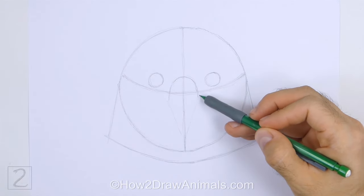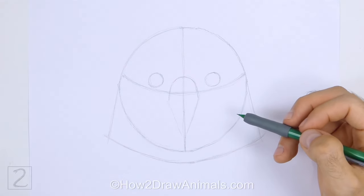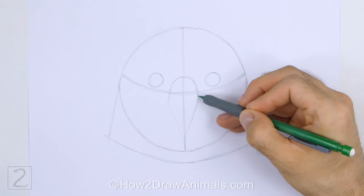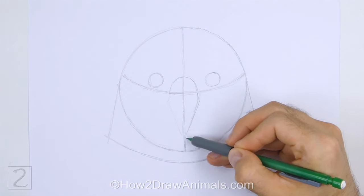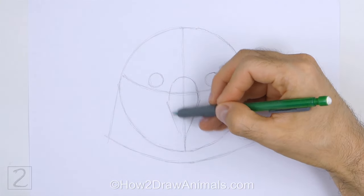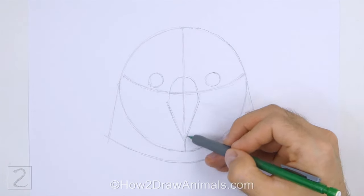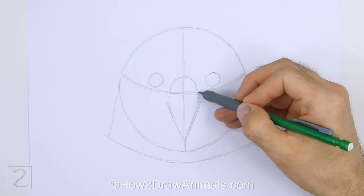At the bottom, draw an angled line as a guide for the bottom part of the beak. The beak should be big in relation to the head. This guide should be similar to the letter V.